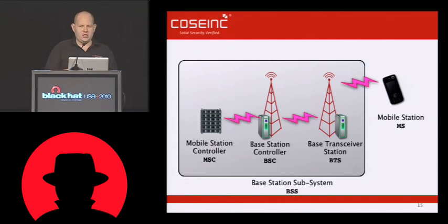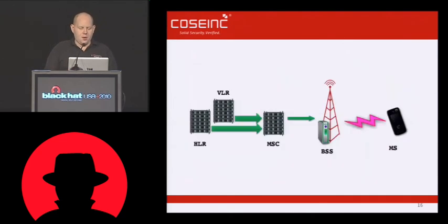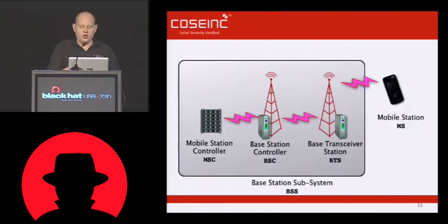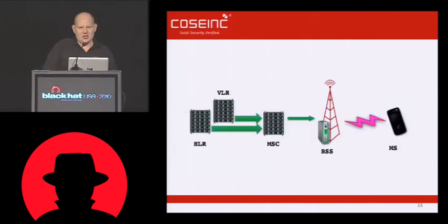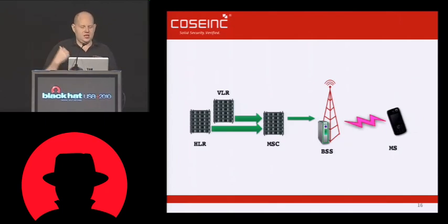The base transceiver station talks to the phone over an ethernet connection or sometimes a direct radio link back up to the BSC. The BSC goes back to the MSC and so on. All of this together — the BTS and BSC — is called the base station subsystem, or BSS. The base station subsystem is what we're going to be attacking in the demos that do not work. The MSC is in communication with the back-end stuff.